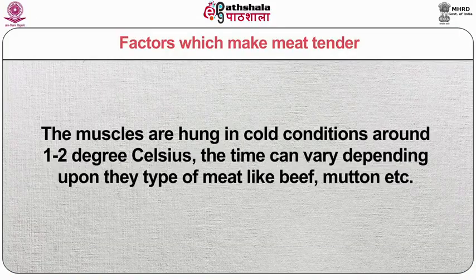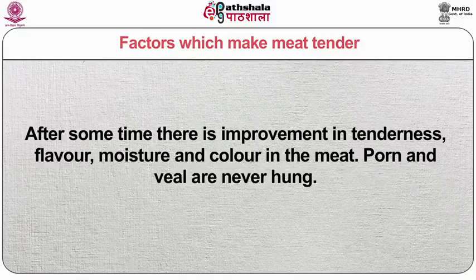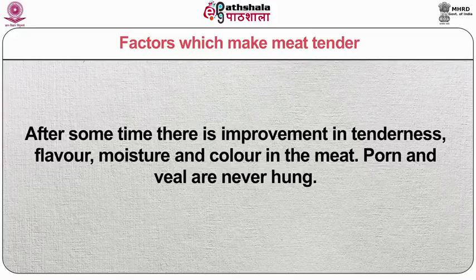Tenderizers: when used, tenderizers make the meat tender. Acidic foods like vinegar, tomatoes, curds, lemon and tamarind also help to tenderize the meat. Aging of meat: meat should not be eaten immediately after slaughtering as rigor mortis sets in and stiffens the muscles. The muscles are hung in cold conditions around 1 to 2 degrees Celsius; the time can vary depending upon the type of meat such as beef. After some time there is improvement in tenderness, flavor, moisture and color in the meat. Veal is never hung. Tough meats are soaked in acidic solutions like vinegar, wine or sometimes curd, which makes the meat tender and helps improve the flavor.